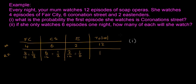Starting with question 1: what is the probability that the first episode she watches is Carnation Street? We go to Carnation Street - the relative frequency is a half, so the answer is just a half. That's the probability, because half of the episodes she watches normally are Carnation Street, so we can guess that half is the probability that she watches Carnation Street.